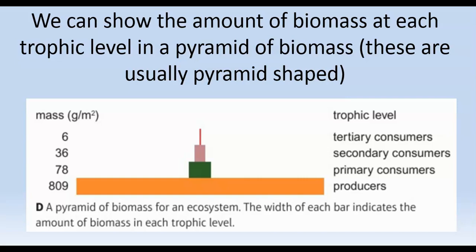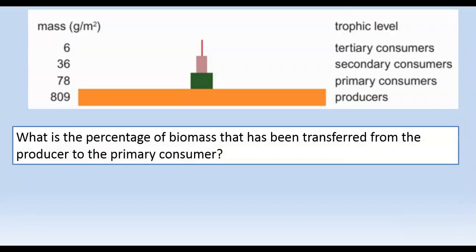We're now going to look at biomass in a slightly different way. What we can do is show our biomass for each trophic level as a pyramid — referred to as a pyramid of biomass. Here we've got our producer at the bottom with a mass of 809 grams per metre squared, then we've got our primary consumer, secondary consumer, and tertiary consumer. Just like when we do our food web, we always start with the producer at the bottom, and these are always pyramid shaped — a very large bottom, getting narrower as they move up. We can do calculations on these exactly the same as we've just done, but instead of being given the information as a food chain, we're now being given information as a pyramid of biomass.